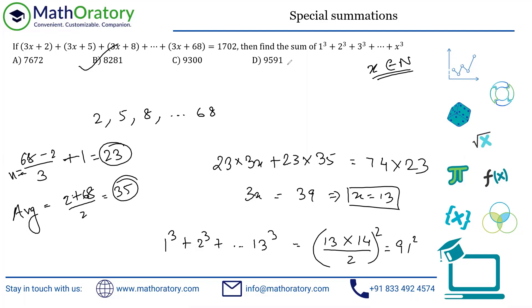So 8281 is the answer for this question. The additional steps I needed to explain I covered while solving. Hopefully everything was understood. Thank you for joining in.